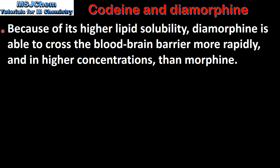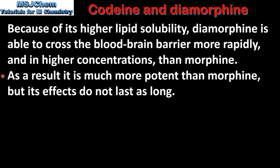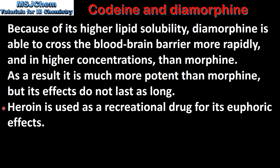Because of its higher lipid solubility, diamorphine is able to cross the blood-brain barrier more rapidly and in higher concentrations than morphine. As a result it is much more potent than morphine but its effects do not last as long. Diamorphine or heroin is used as a recreational drug for its euphoric effects.